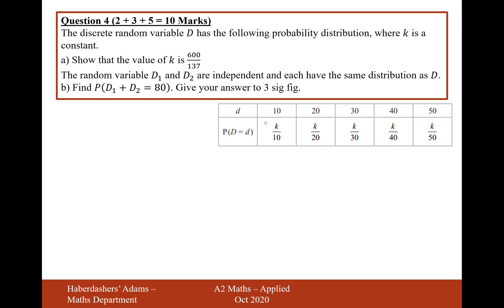So I think what we're going to do here is use the fact that if we add up these probabilities we'll get 1. So that's the maths we're going to use in part a. So k over 10, add k over 20, add k over 30, add k over 40, add k over 50 is going to equal 1.